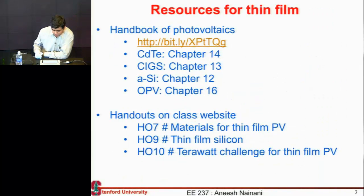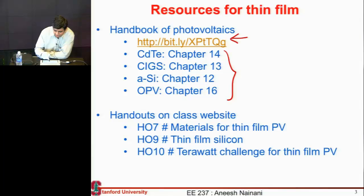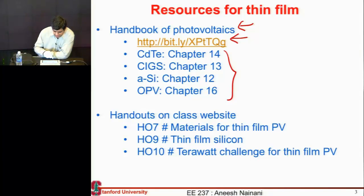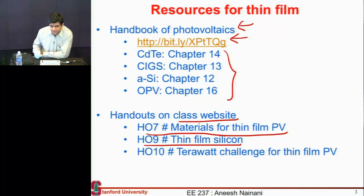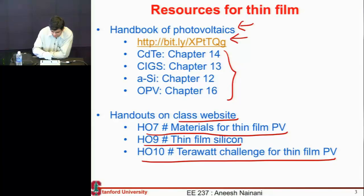Here are some more references where you can dive deeper if you're inclined, or if you're confused and want to see where I picked up most of the material. For different thin film technologies, I mostly picked from the Handbook of Photovoltaics, which has a chapter dedicated to each technology. There are also some handouts on the class website — one talks about how to pick materials that are good candidates for thin film PV, covering properties like cost, availability, and absorption. There's another handout on thin film silicon, both amorphous and multicrystalline.